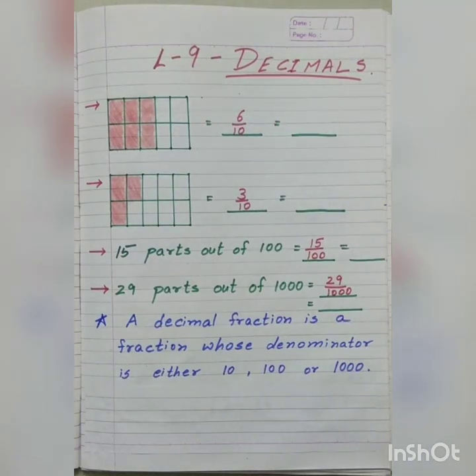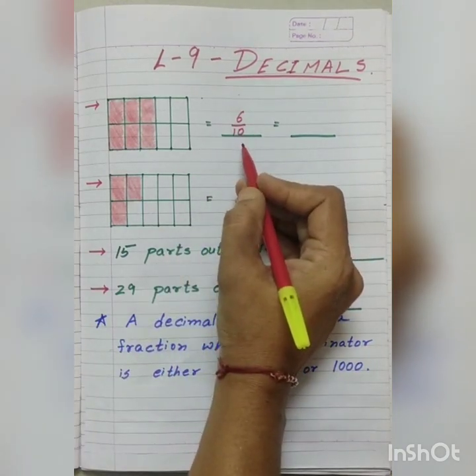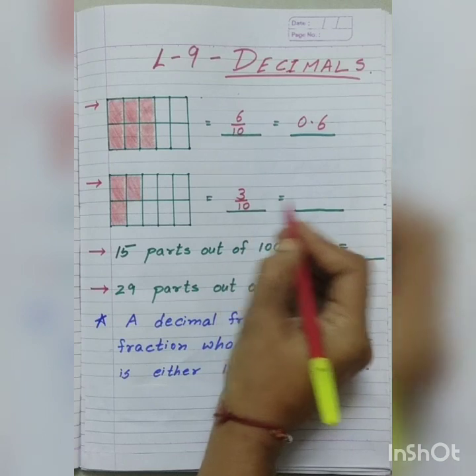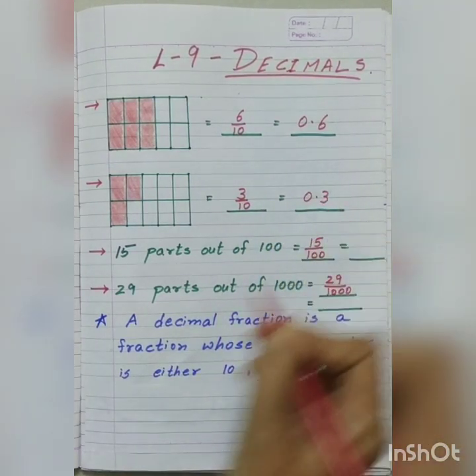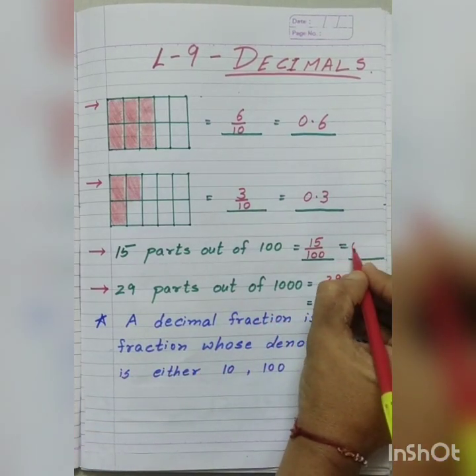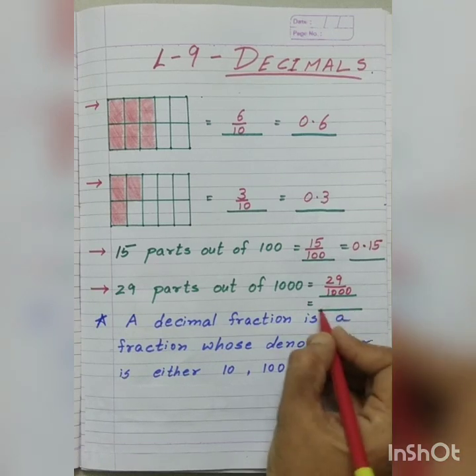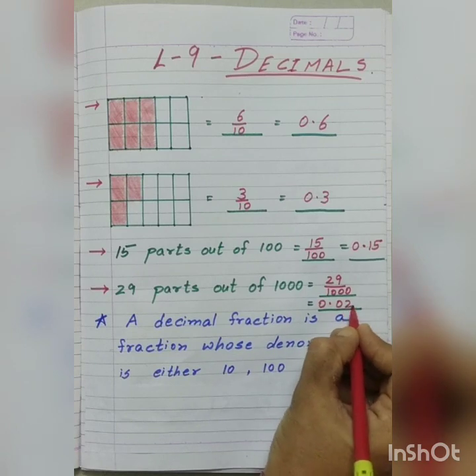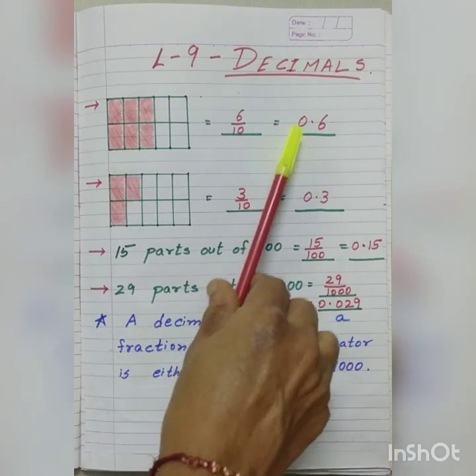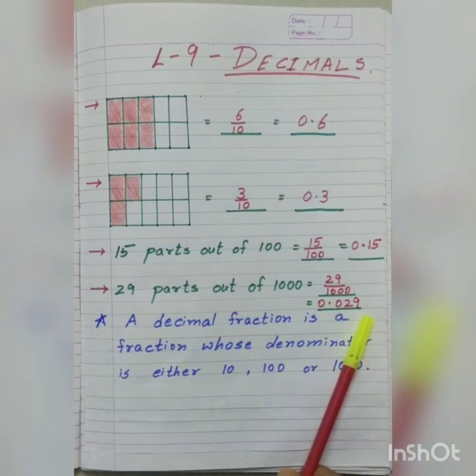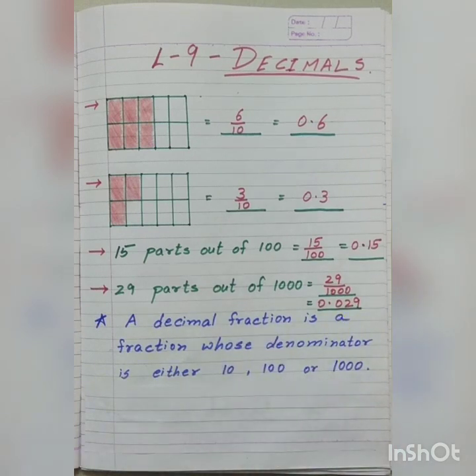Kids, this fractional number can be represented in decimal form also. Here, 6 upon 10 is represented as 0.6. Similarly, 3 upon 10 is represented as 0.3. 15 upon 100 can be represented as 0.15, and 29 upon 1,000 can be represented as 0.029. Now, numbers 0.6, 0.3, 0.15, 0.029 are called decimal numbers or decimals. Let's learn and understand all these in detail in this lesson.